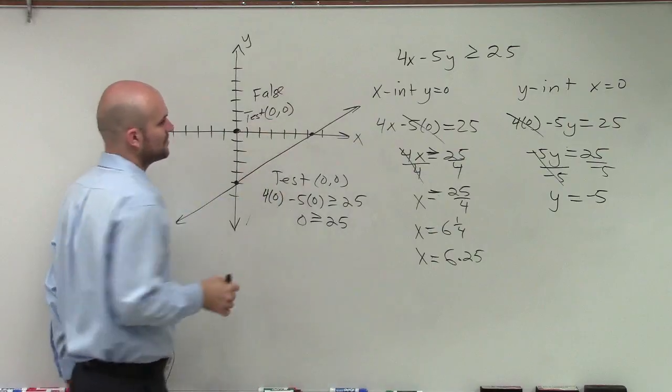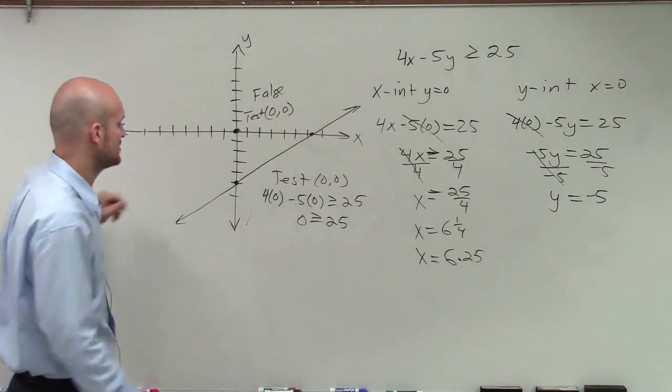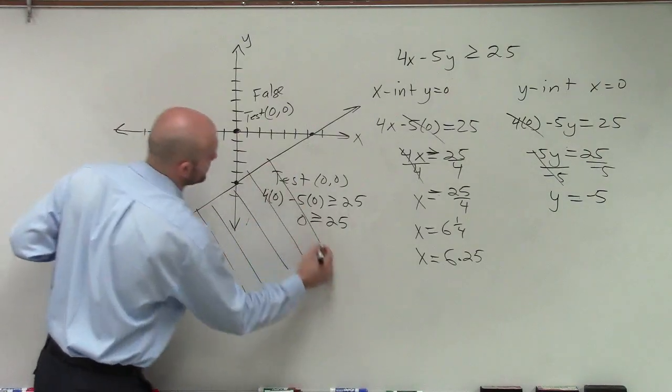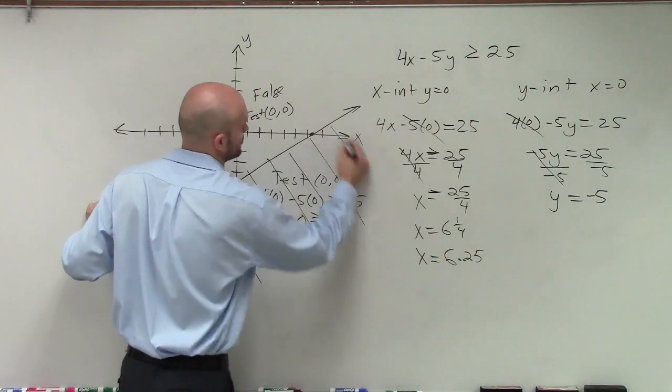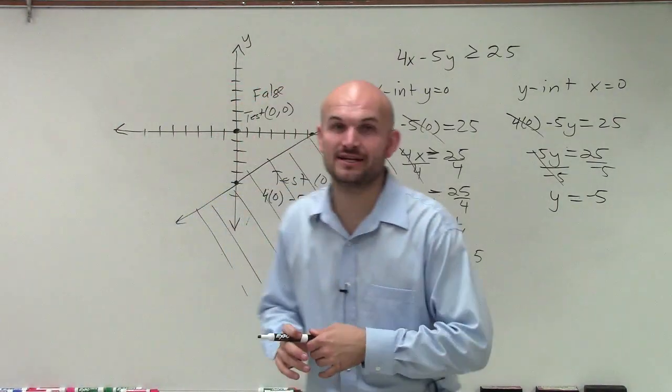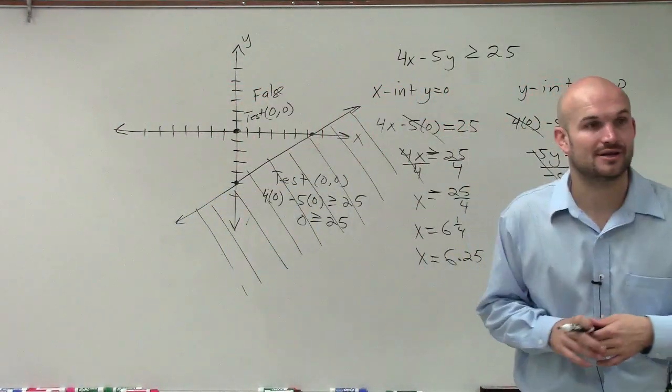So since our test point is false, that means all the values above our line are false. And then all of our points below our boundary line are now going to be true. So there you go, ladies and gentlemen. That is how you graph an inequality by using the x and y intercepts. Thanks.